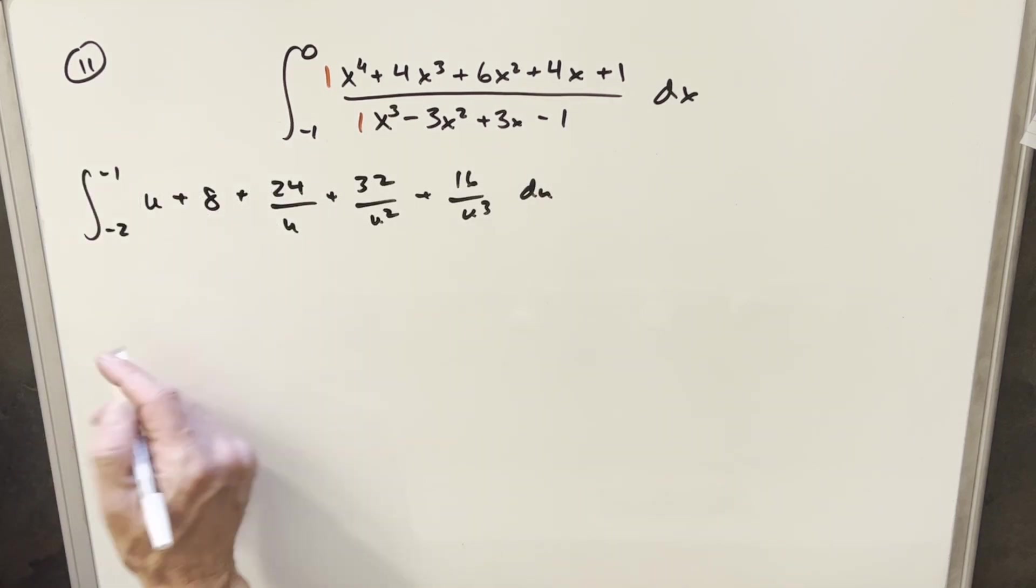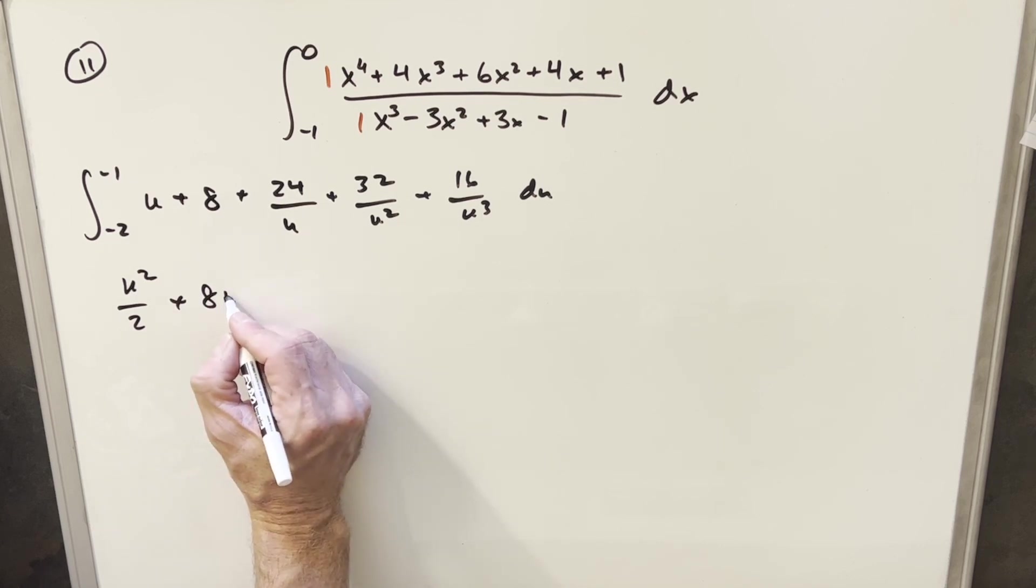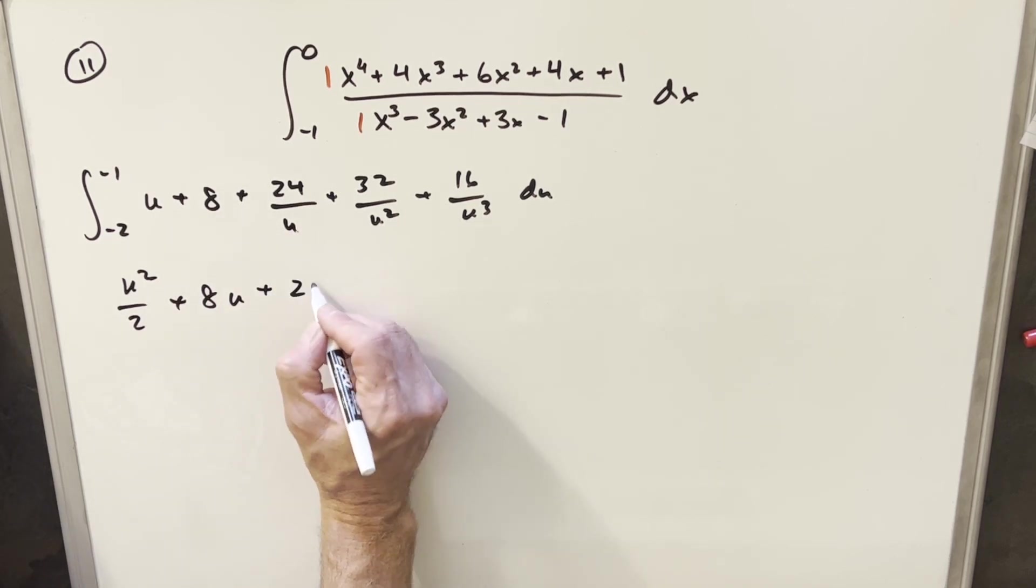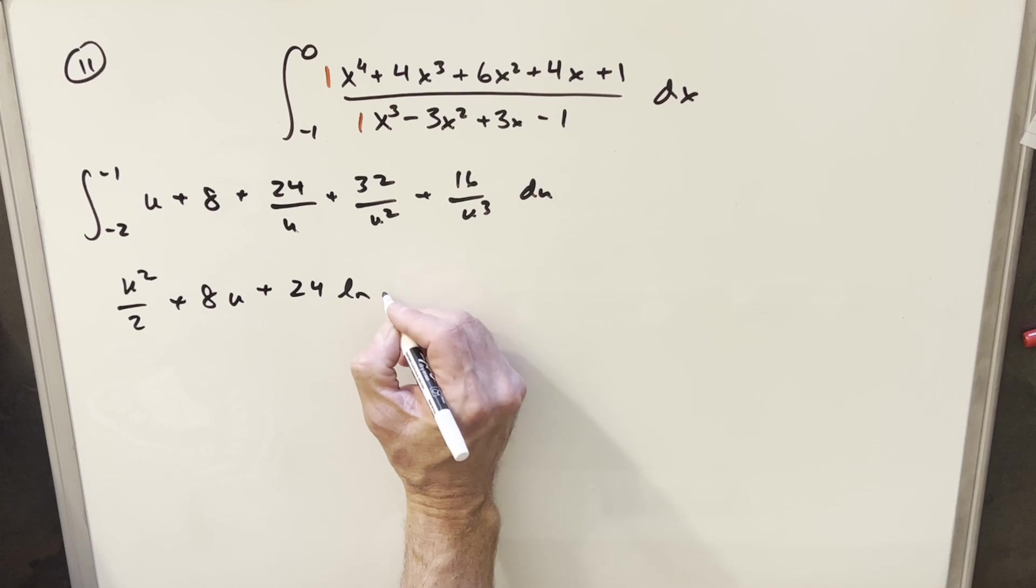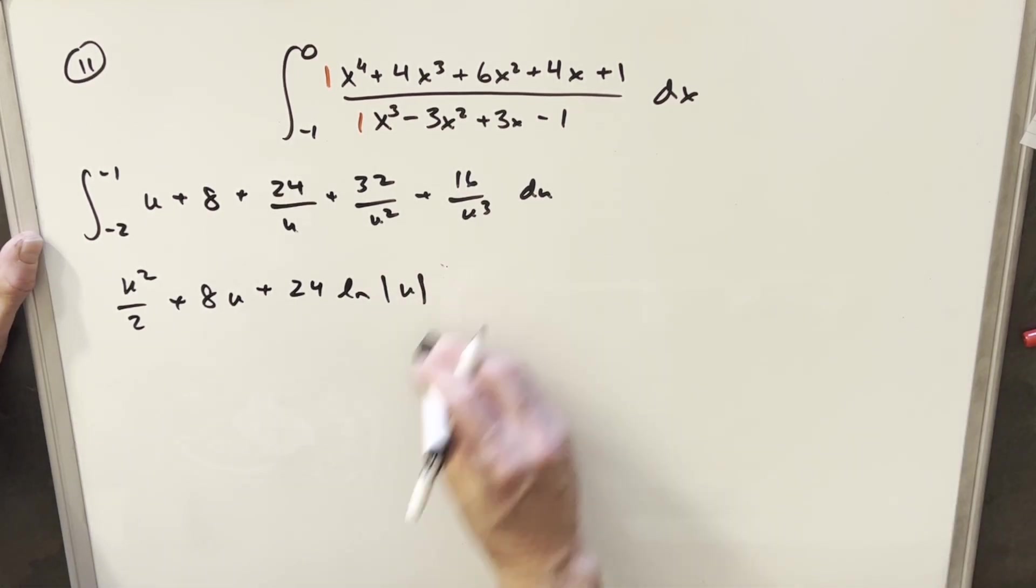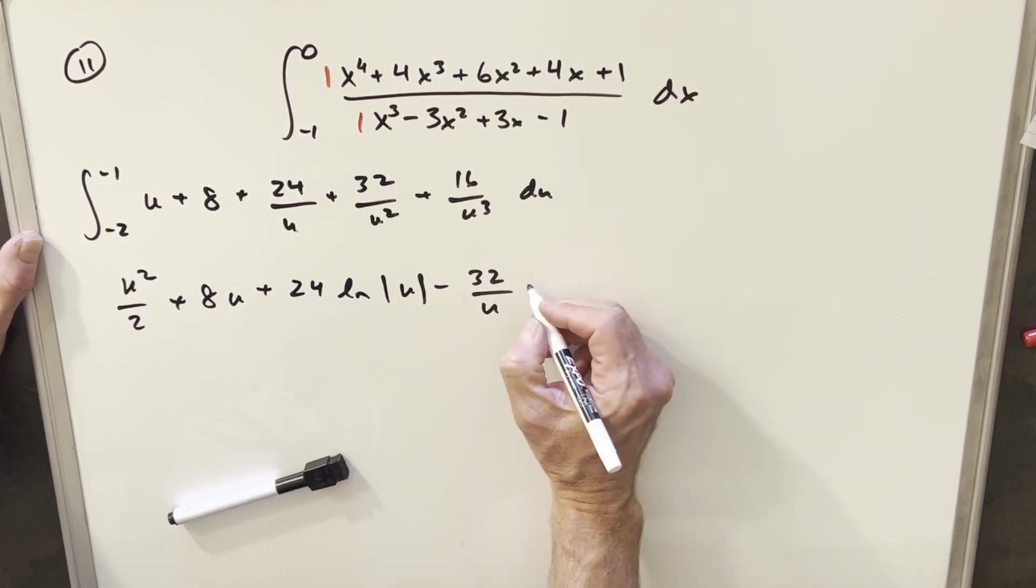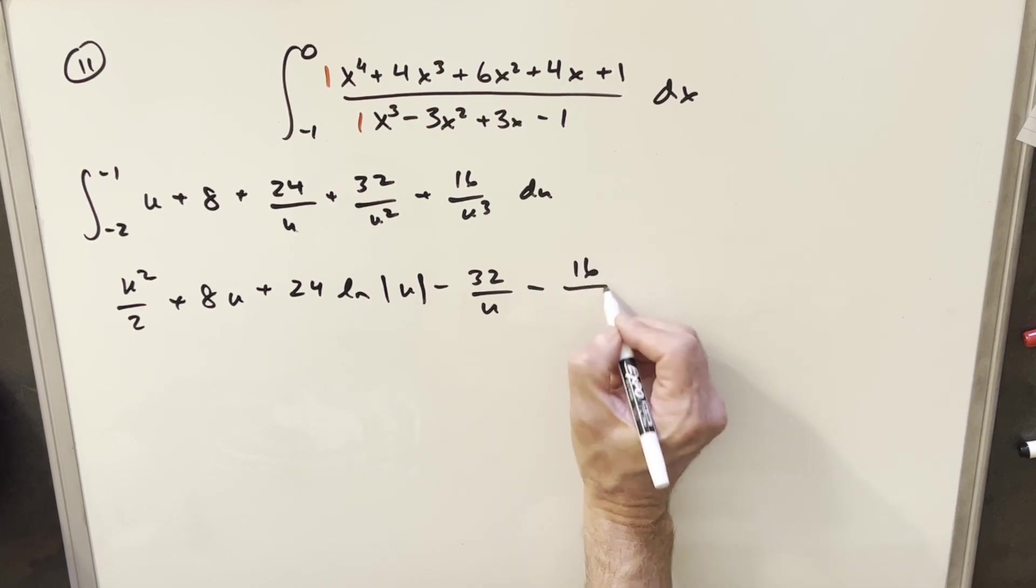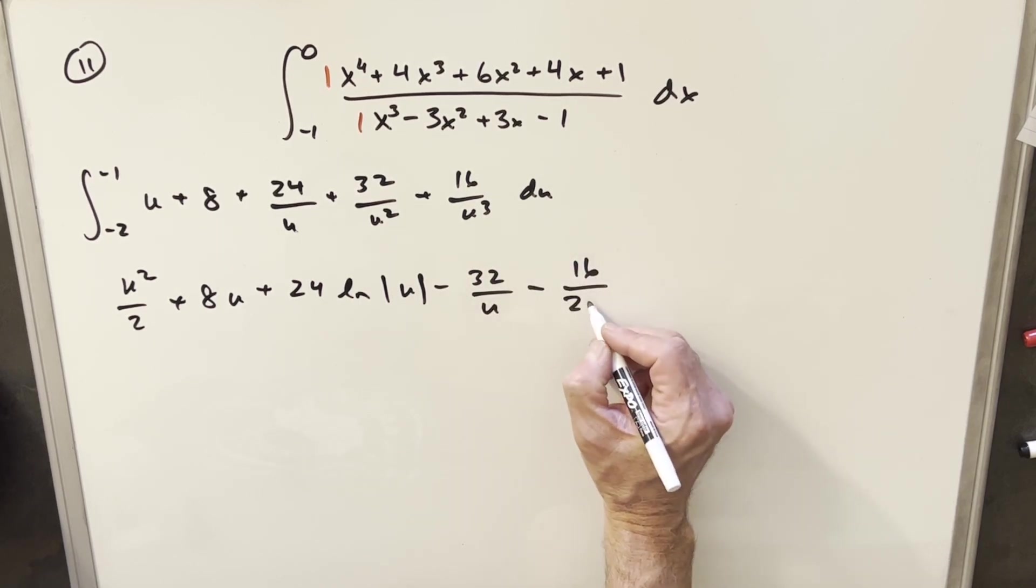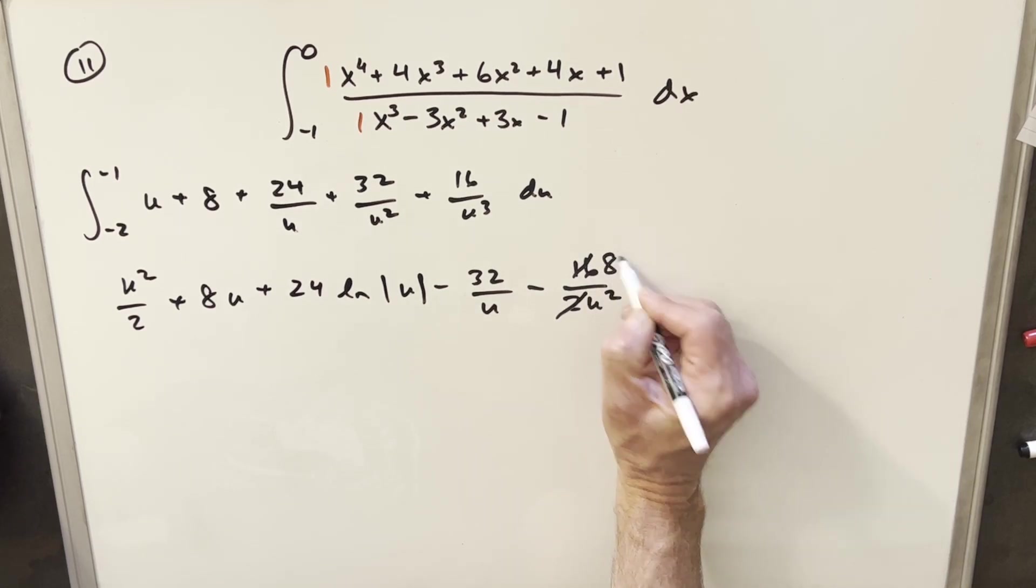But now this is going to be pretty easy to integrate. So I'll just integrate my u. I'll have u squared over 2 here. This 8, when you integrate that, it's going to be 8u. Next here, we're going to have 24 natural log of absolute value u. Then 32 over u squared. This is actually going to give me a minus in front here. I put in a minus, and then this is going to become 32 over u. And then for this last one, we're going to have minus 16 over, we're going to have a 2 from this. We're going to have over 2 u squared. But then I can actually cancel a 2 with a 16. We'll have an 8 here. And we just need to evaluate this from minus 2 to minus 1.